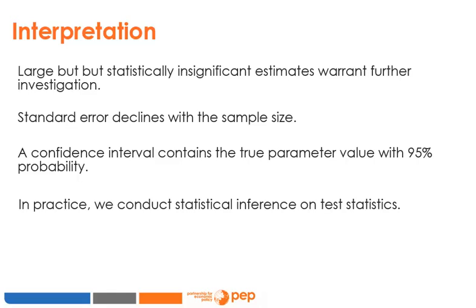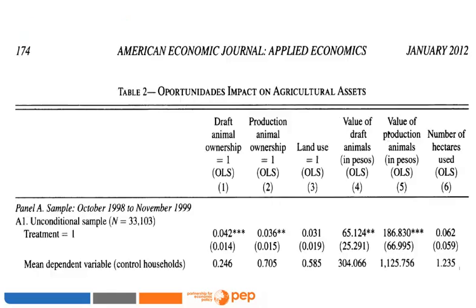In practice, we do not conduct statistical inference directly on the estimate of the treatment effect beta-hat, but on a transformation of this estimate called the test statistic. Let's take a look at Table 2 on page 174 of the PROGRESA article on the course website. This table presents the effects of receiving the cash transfer on agricultural and micro-enterprise activities.